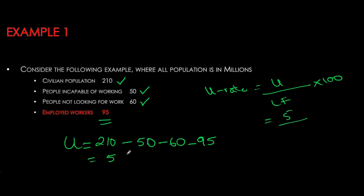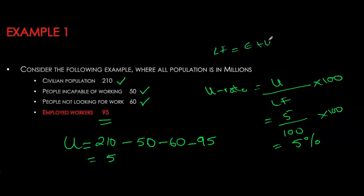So these 5 million as a percentage of my labor force gives us the unemployment rate. With 5 million unemployed and 95 million employed, the total labor force is 100 million, giving an unemployment rate of 5%. The labor force is calculated as employed plus unemployed, which is 100 million workers. I can also use this example to calculate the employment rate and the labor force participation rate.